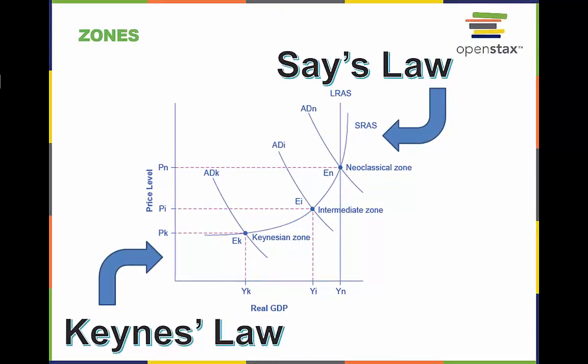Keynes' law holds that demand creates its own supply, and Say's law holds that supply creates its own demand. Both can be illustrated using the AS-AD model. If we divide it into zones: near equilibrium EK in the Keynesian zone, at the far left of the AS curve, small shifts in aggregate demand either to the right or to the left will affect the output level YK but will not much affect the price level. In the Keynesian zone, aggregate demand largely determines the quantity of output.